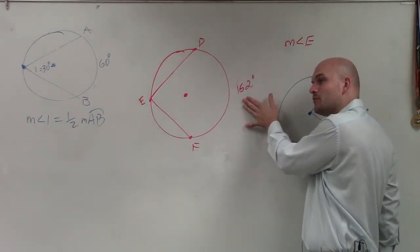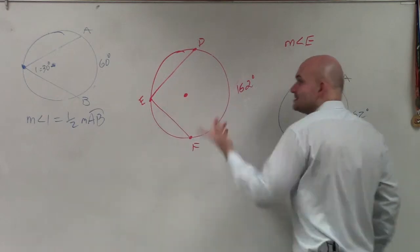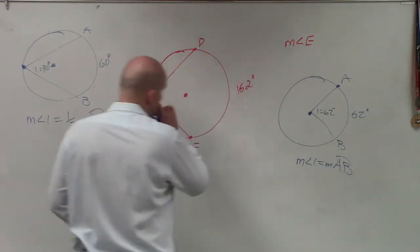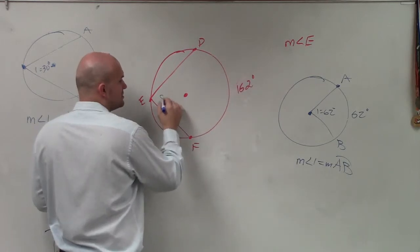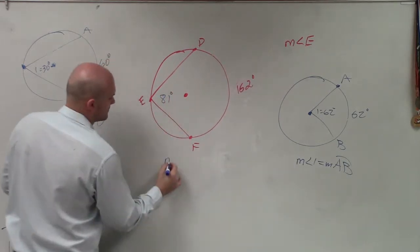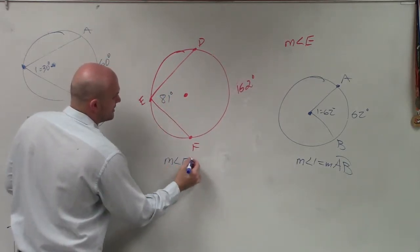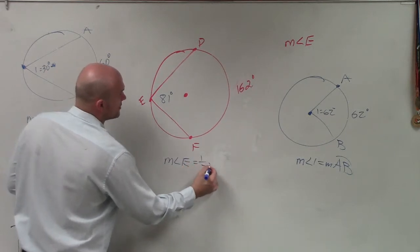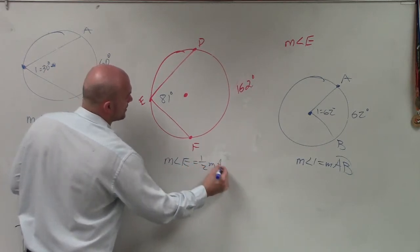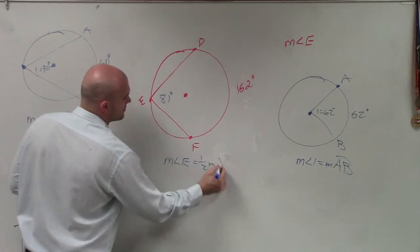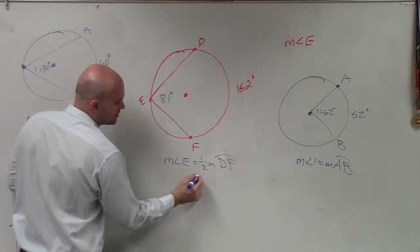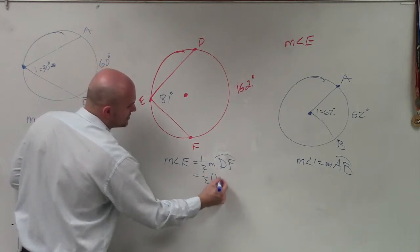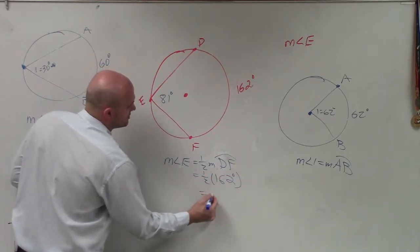So if I'm looking at this and I say 162 and I want to figure out what E is, then E equals one-half the measurement of my arc DF. I look at what is the measurement of my arc. It's 162 degrees. So it's one-half times 162, which equals 81.